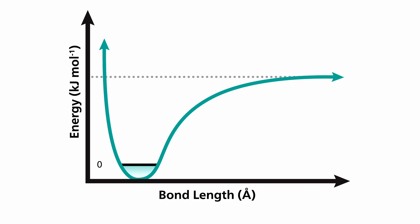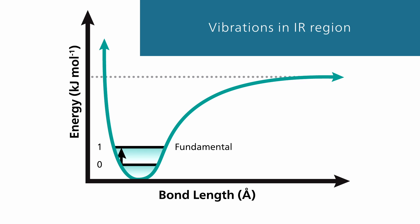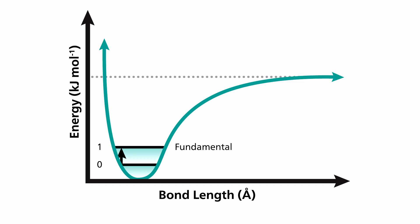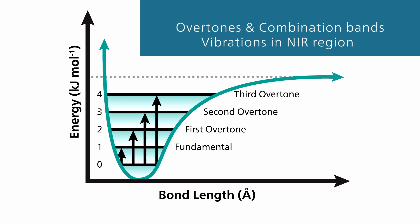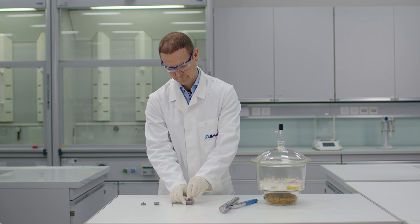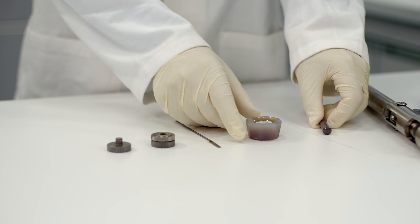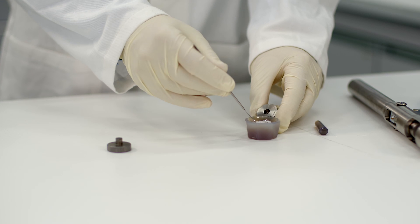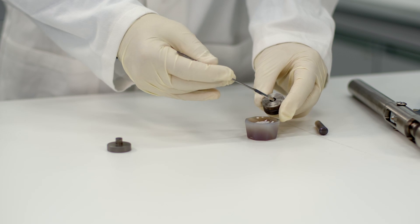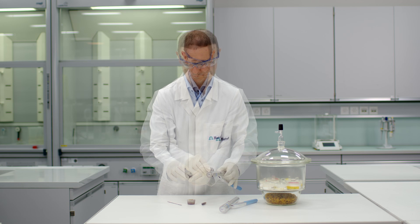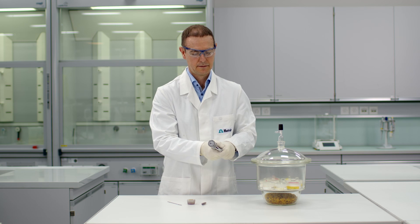Let's look at the first difference: the sample size. Vibrations in the infrared region are classified as fundamental vibrations. As such, they have a higher probability of occurrence than overtones and combination bands, which are vibrations happening in the near-infrared region. Therefore, infrared light is absorbed more strongly than NIR light. Because of this, small sample quantities should be used with IR spectroscopy. Sample preparation is often required as well, for example, needing to press a potassium bromide tablet or prepare liquid dilutions.